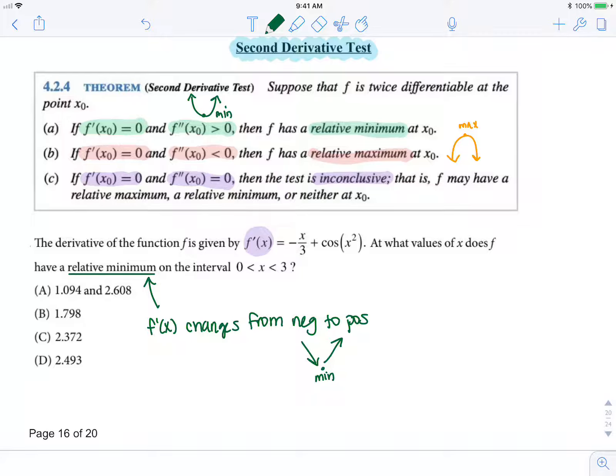So we are going to graph this because we could tell it's calculator active by the answers and see where does my derivative change from negative to positive.